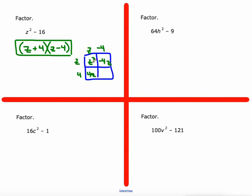And 4 times negative 4 is negative 16. These two terms cancel out. Negative 4z plus 4z is 0z. And we're just left with z squared minus 16. So that's the correct way to factor it.